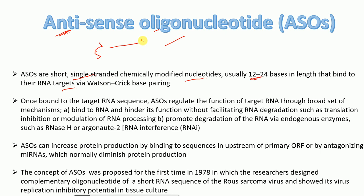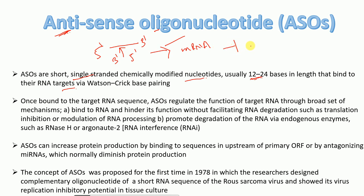If this is our target mRNA in the 5' to 3' direction, then the antisense oligonucleotides running 3' to 5' will be able to bind the target mRNA, thereby inhibiting or degrading mRNA production.